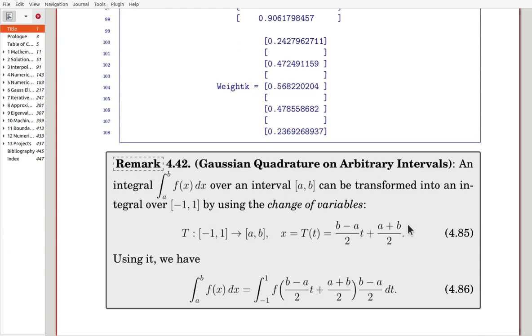Now the Gaussian quadrature, Gaussian integration, is defined on minus one to one. But we can use it for arbitrary intervals. Here integral a to b f(x)dx can be transformed into an interval over minus one to one by using the change of variable. From minus one to one to a, b, now this is a t variable and x variable here. Then here the transform can be defined in this way. It's a scaling factor. b minus a is the length of the interval. The length of one interval is two. So that b minus a over two t. Once t is zero, the center point must go to center point, which is a plus b over two. So that is the transformation.